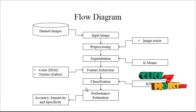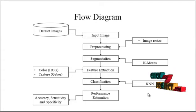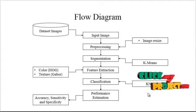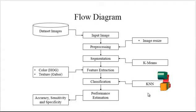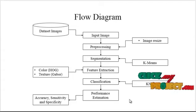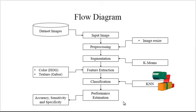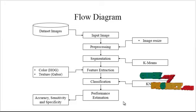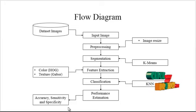After feature extraction, we perform classification using the k-nearest neighbor (KNN) method to classify whether the input is fire or non-fire. Then we evaluate the performance of the process using accuracy, sensitivity, and specificity — three parameters that determine whether our process is efficient.